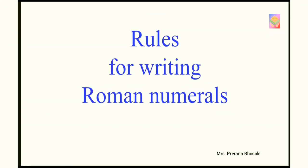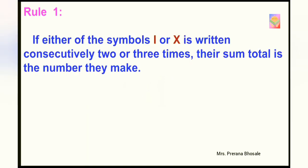There are certain rules for writing numbers using the Roman numerals. Let's see how to write numbers using these rules. According to first rule, if either of the symbol I or X is written consecutively 2 or 3 times, their sum total is the number they make. Now let's see with an example. If you write I and I 2 times, its value will become 1 plus 1 is equal to 2. Similarly, if you write I 3 times, its value will become 1 plus 1 plus 1 is equal to 3.